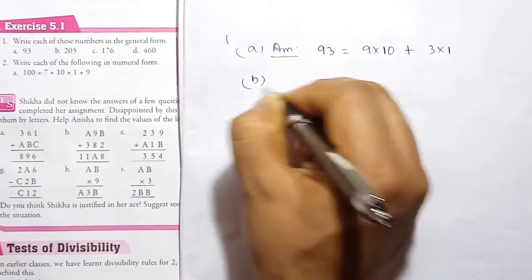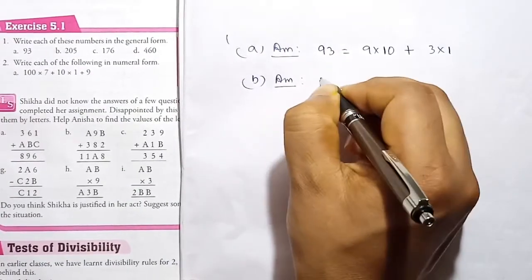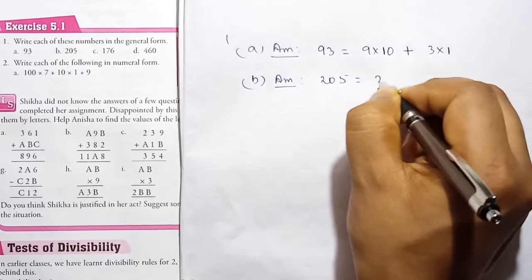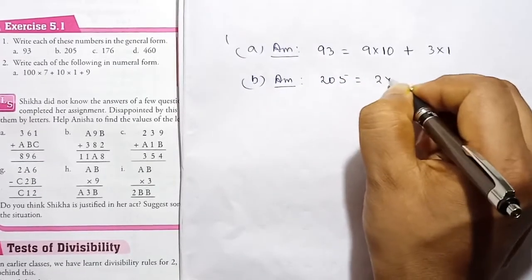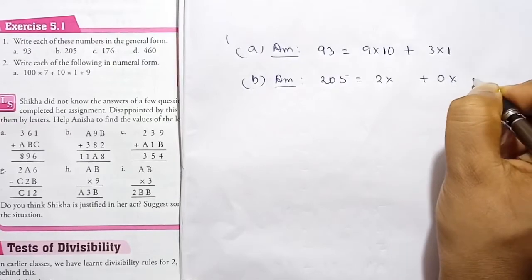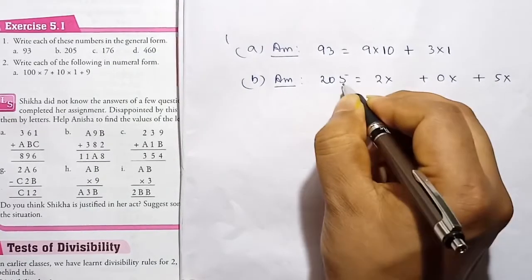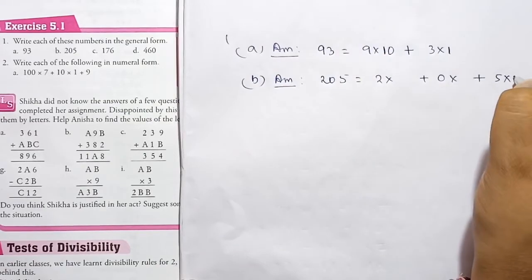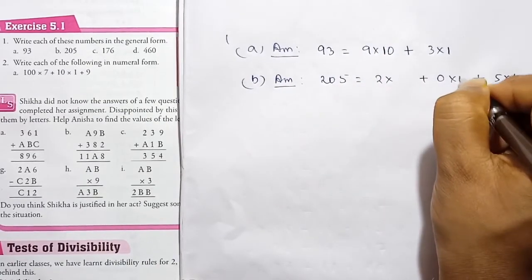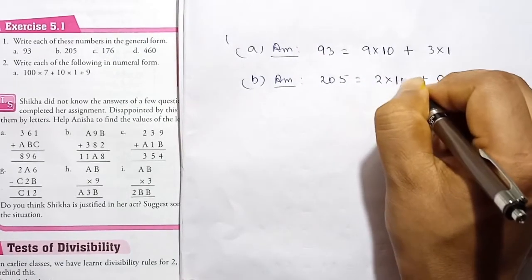Question B. The number is 205. So we write 2 multiplied by 100, plus 0 multiplied by 10, plus 5 multiplied by 1. Here the place values are: ones is 1, tens is 10, and hundreds is 100.